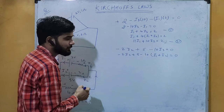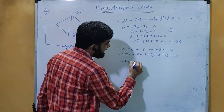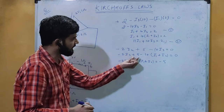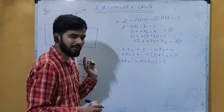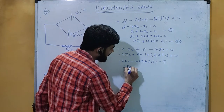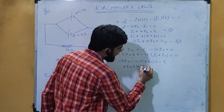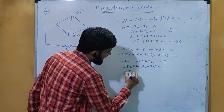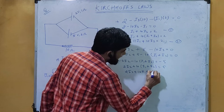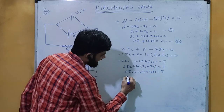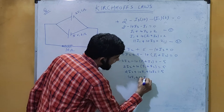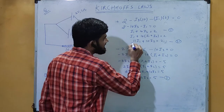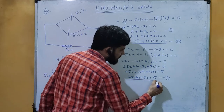Expanding: minus 2 i2 minus 10 i1 minus 10 i2 plus 5 equals 0. Rearranging: 10 i1 plus 12 i2 equals 5. This is equation number 3. Now I have equation 2 and equation 3 and can solve these two equations to find the values of i1 and i2.